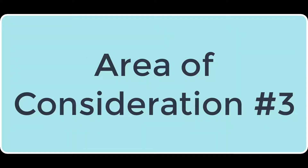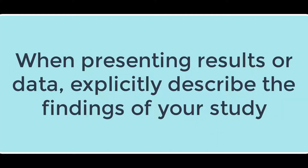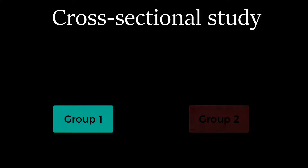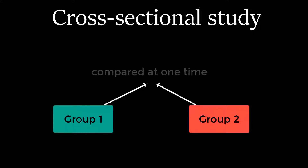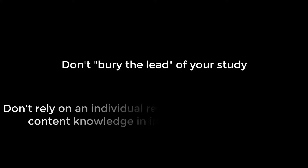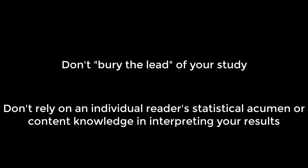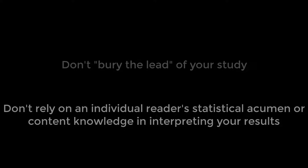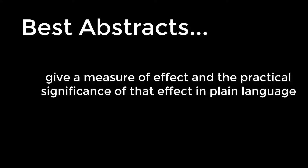The third area of consideration is that when presenting results or data, explicitly describe the findings of your study. You want to make sure to stay within the confines of your evaluation or research design. For example, with cross-sectional studies — those that compare more than one group at the same time — make sure not to use any causal language. More importantly, don't bury the lead of your study, and don't rely on an individual reader's statistical acumen or content knowledge in interpreting your results. The best abstracts give a measure of effect and the practical significance of that effect in plain language.